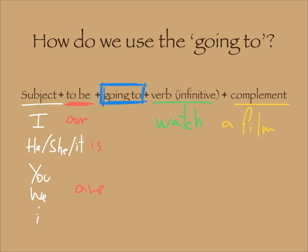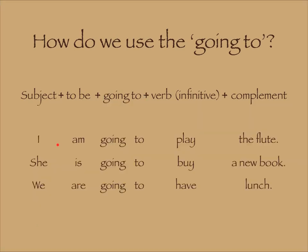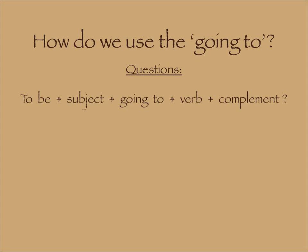For example: 'I am going to watch a film' or 'He is going to open the door.' Some other examples: 'I am going to play the flute,' 'She is going to buy a new book,' and 'We are going to have lunch.' Remember to put the verb 'to be' in the right form — I am, she is, we are — then 'going to' plus the verb plus the complement. The complement could be an object, a place, whatever.